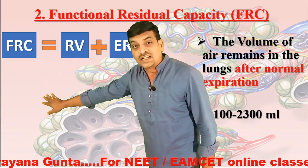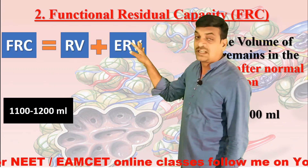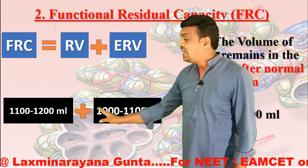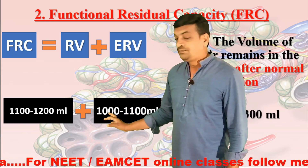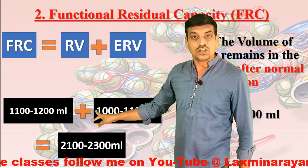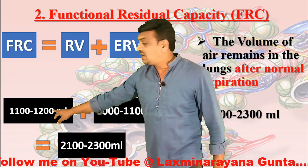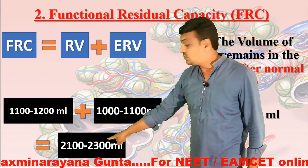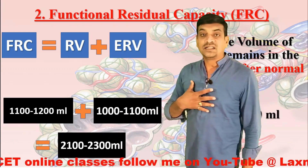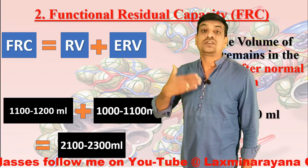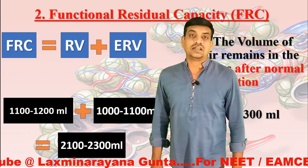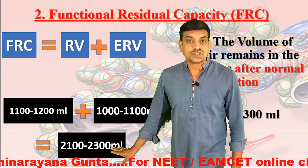This residual volume is 1100 to 1200 ml, and the expiratory reserve volume is 1000 to 1100 ml. Adding the lower values: 1100 + 1000 = 2100 ml, and adding the upper values: 1200 + 1100 = 2300 ml. That is why the volume of air that remains in the lungs when the lungs are functional after normal expiration is 2100 to 2300 ml, which we call the functional residual capacity.